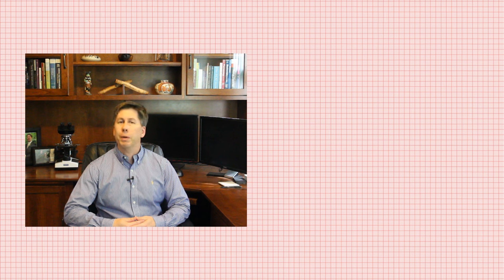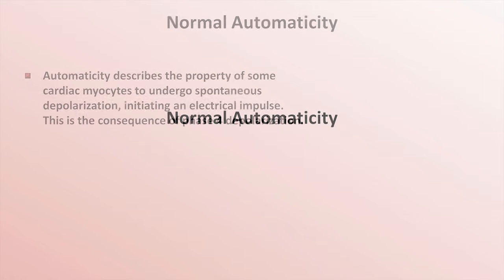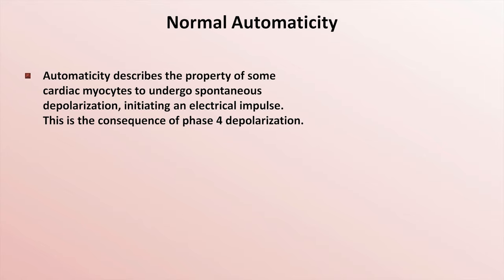For the video, I'll be assuming a very basic knowledge of cellular physiology, including vague familiarity with the terms membrane potential and action potential. As listed at the beginning, one of the general mechanisms of arrhythmiogenesis is increased automaticity. However, to understand the principles of increased automaticity, one must first understand the principles of normal automaticity. Automaticity describes the property of some cardiac myocytes to undergo spontaneous depolarization, initiating an electrical impulse.